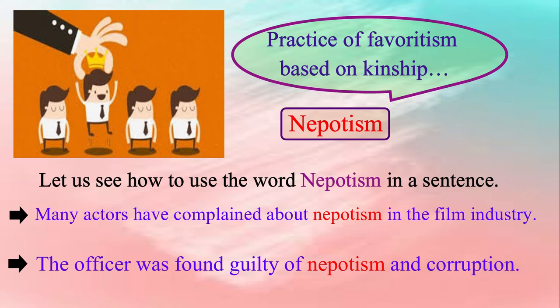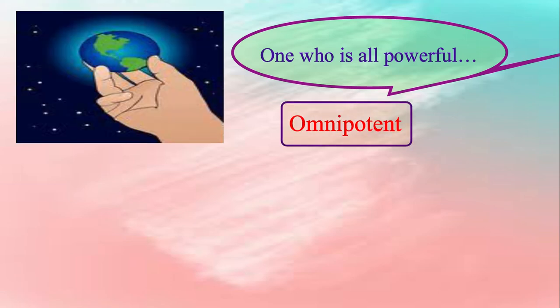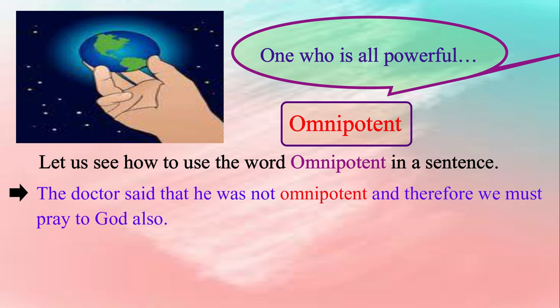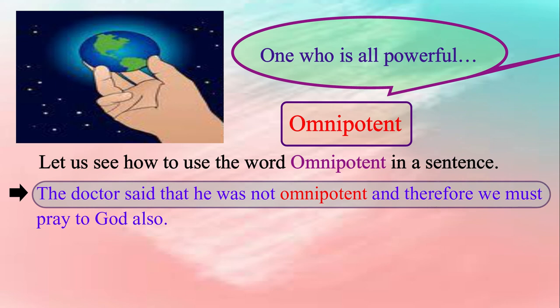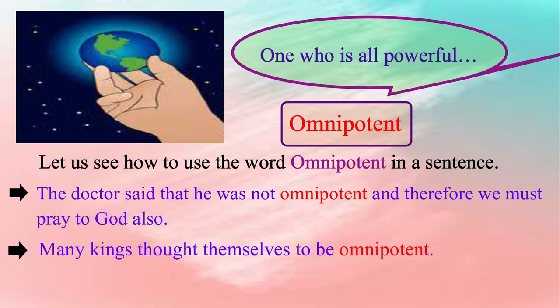Let us see the next group of words. One who is all-powerful, or we can simply say omnipotent. Someone or something that is omnipotent has complete power over things or people. Let us see how to use the word omnipotent in a sentence. Please repeat after me: The doctor said that he was not omnipotent and therefore we must pray to God also. Many kings thought themselves to be omnipotent.